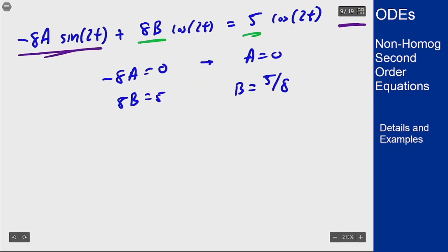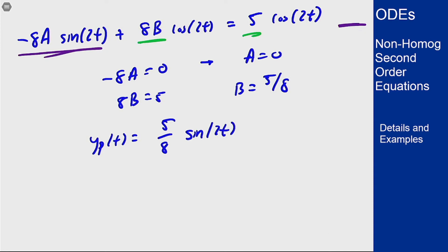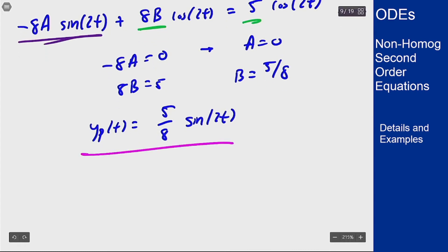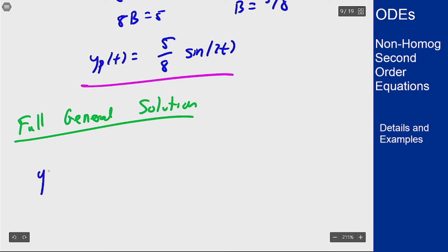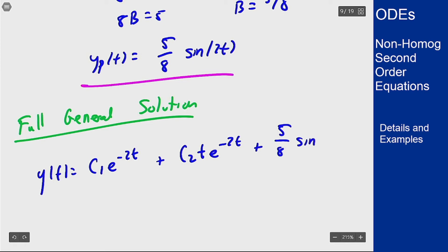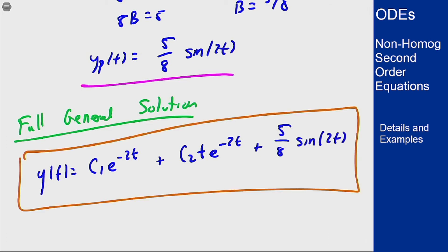Therefore the particular solution is y_p(t) = (5/8) sin(2t). Note that even though we started with a cosine on the right-hand side, the sine ends up being the part in the actual answer. Combining with the homogeneous solution gives the full general solution: y(t) = c1 e^(-2t) + c2 t e^(-2t) + (5/8) sin(2t). Initial conditions could then be applied to find c1 and c2.